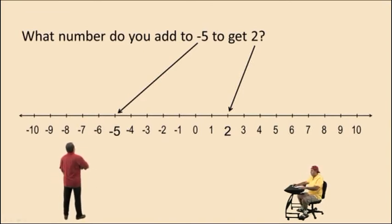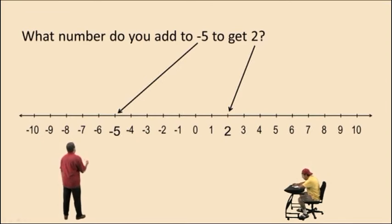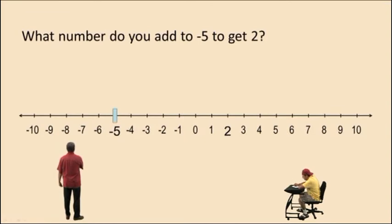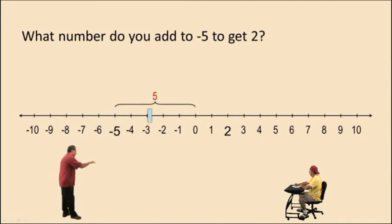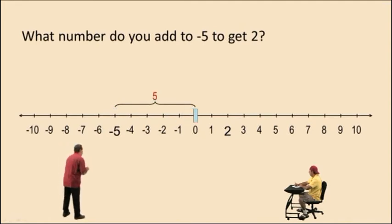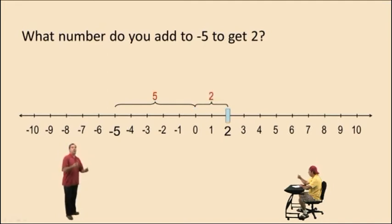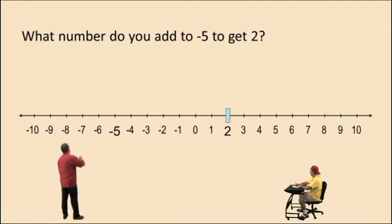What number do you add to negative 5 to get positive 2? If we start at negative 5, we have to move how many units to the right to get to 2? We know if we move 5 units to the right from negative 5, we will be at 0. And if we move 2 more units, that will take us to positive 2 — that's where we're trying to get to. Therefore, we moved a total of 7 units to the right.